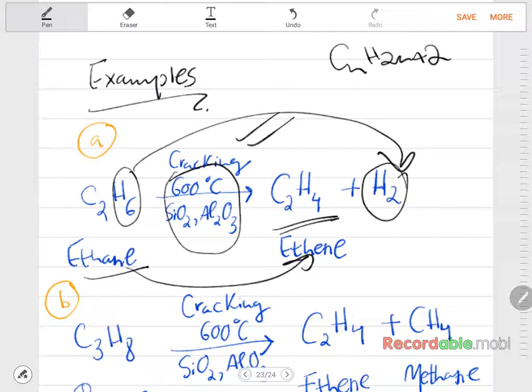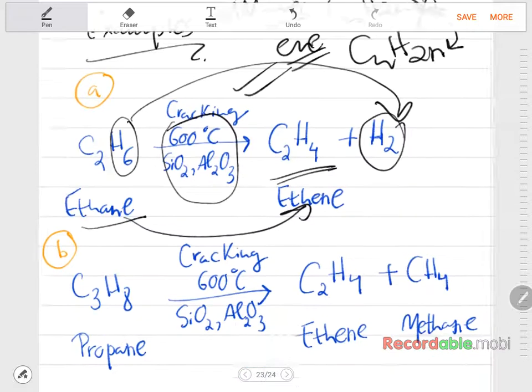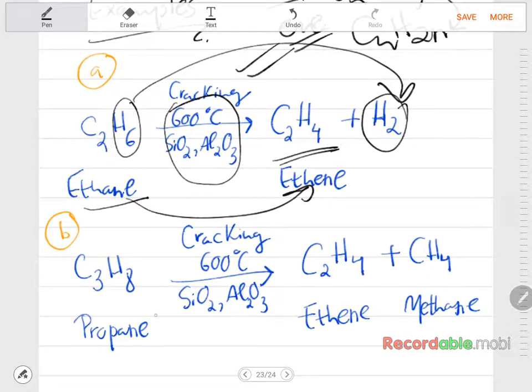Because as you remember, CnH2n+2 is the general formula of the alkanes. For the alkenes it is CnH2n. So basically when you remove H2, it changes to an alkene.